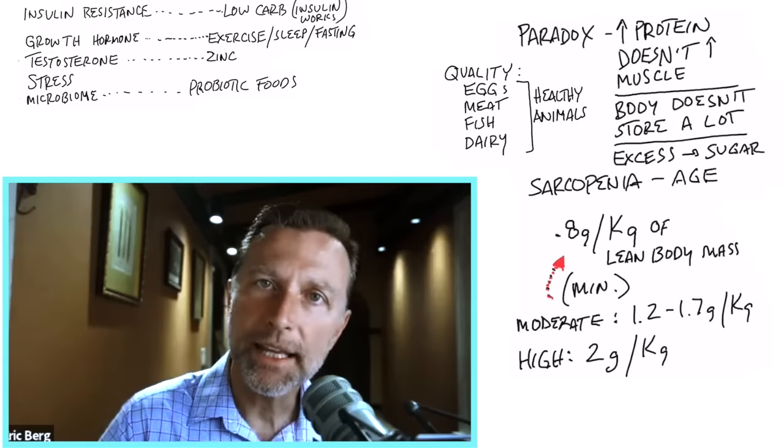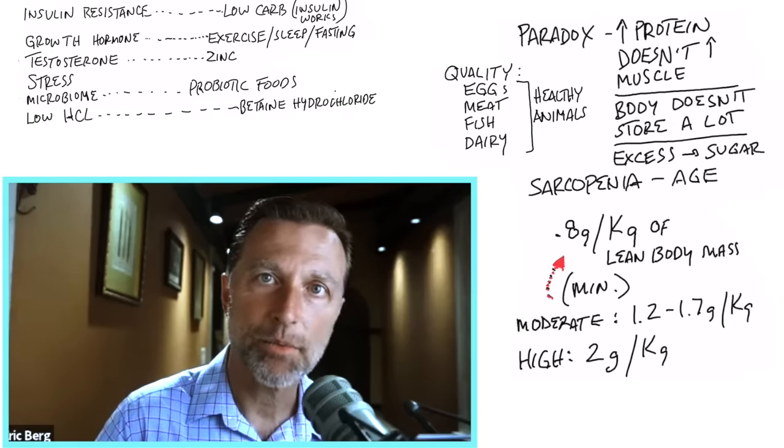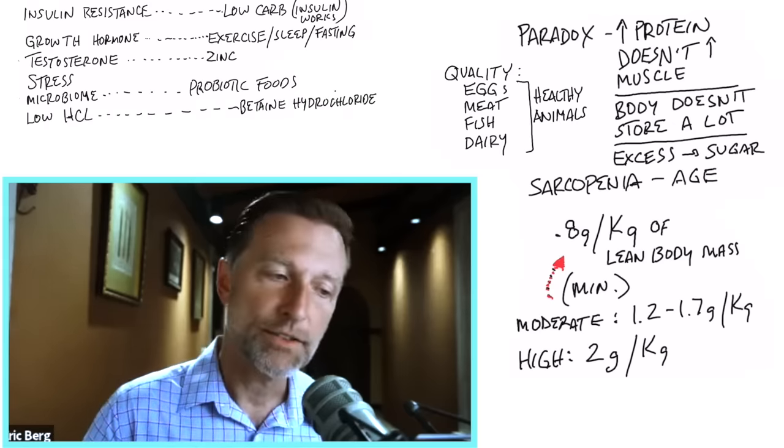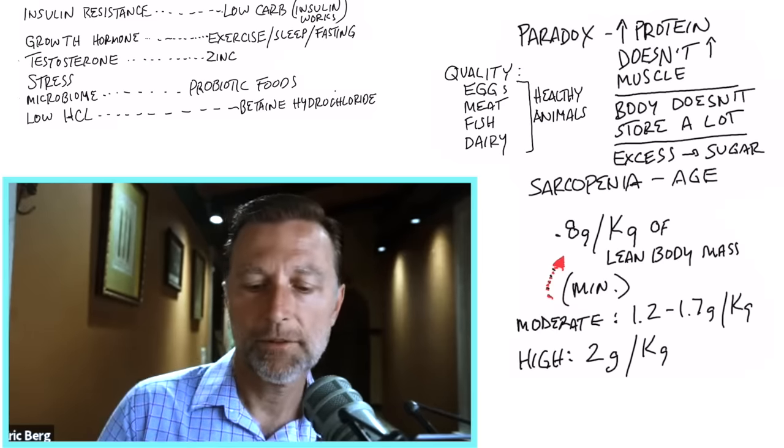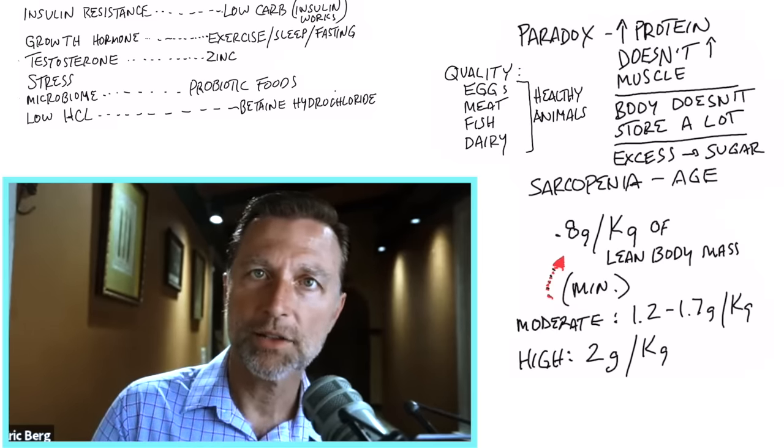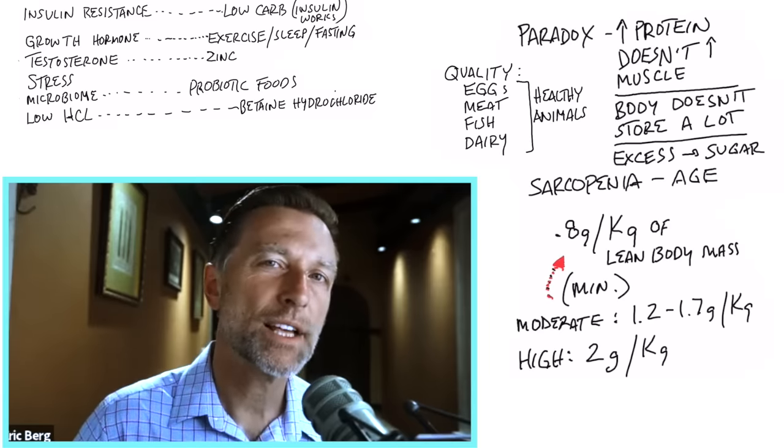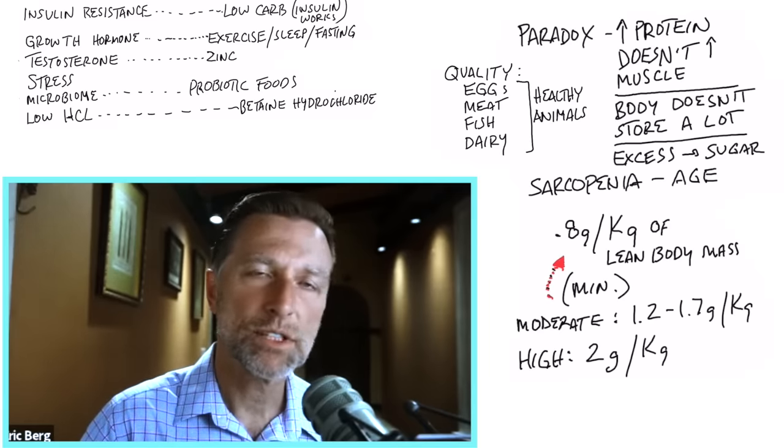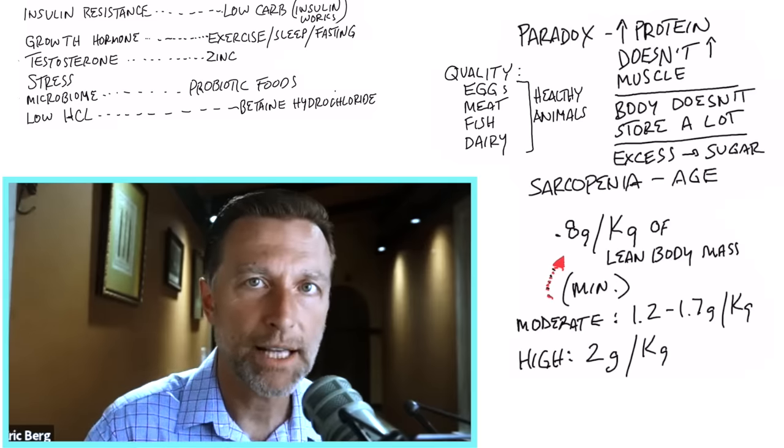Now, the other thing that I've run into with people is that they just don't have enough stomach acid to break down the protein that then turn into muscle. So they never have this fully broke down protein product into the amino acids. So hydrochloric acid is very, very important, especially as we age. The stomach acid goes down.